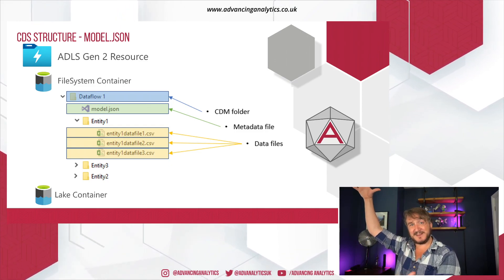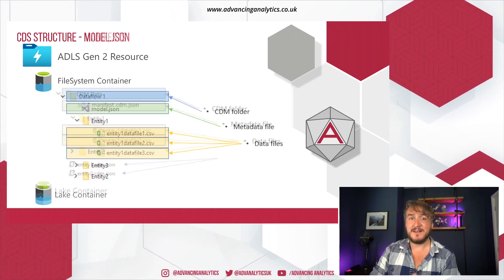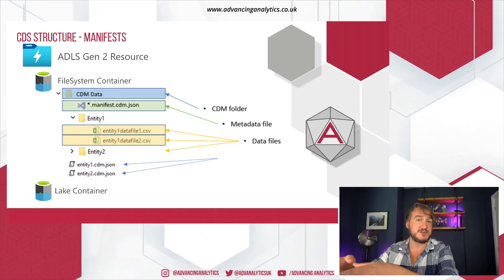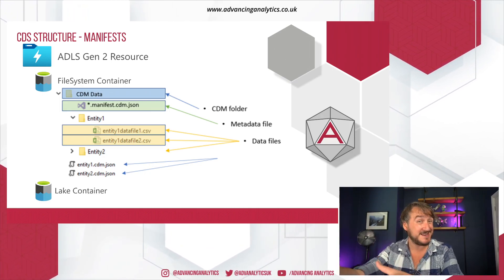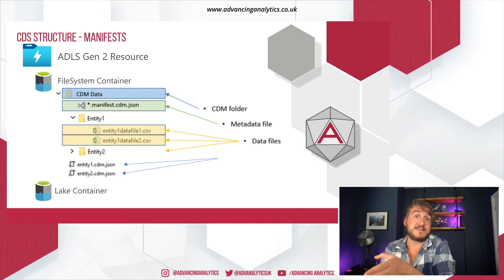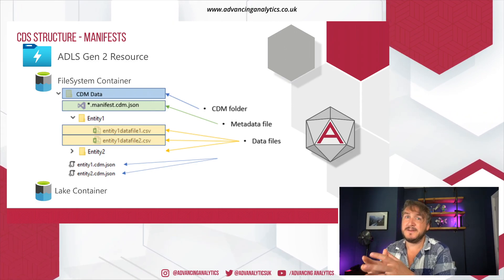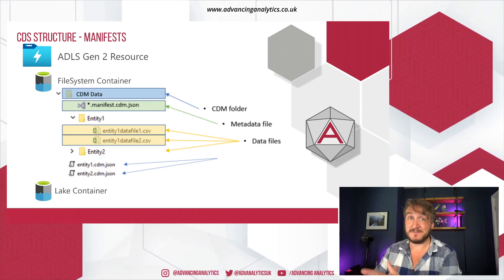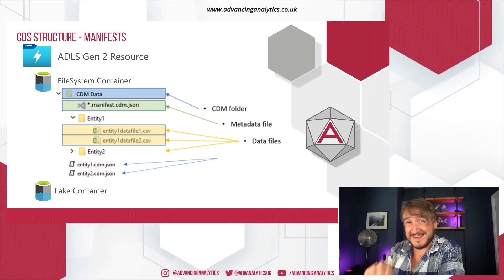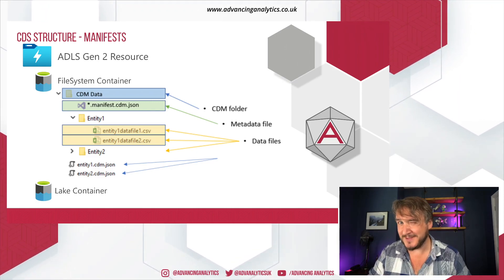With model.json, you have a JSON file with a massive schema definition, and your data is stored in various folders. Around April this year, they came up with the manifest approach — similar, but it breaks up where that metadata lives. You still have folder structures, and your data can be stored in CSV or Parquet (not Delta, sadly). You have different manifest files: one describing entities A, B, and C; another containing A, B, and D. So you can have different combinations and separation, making it much more scalable rather than one giant JSON file. Be aware the different tools use one way or the other.